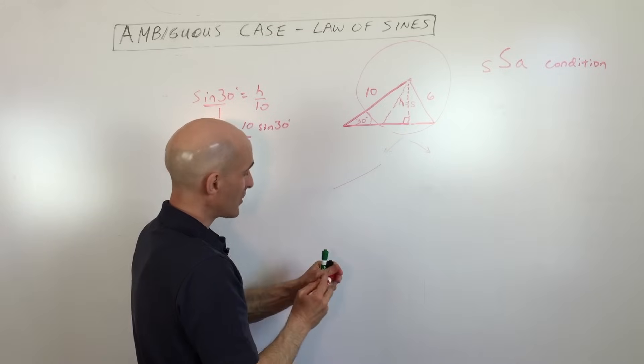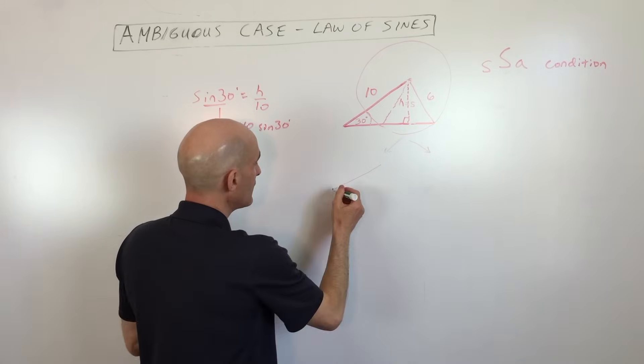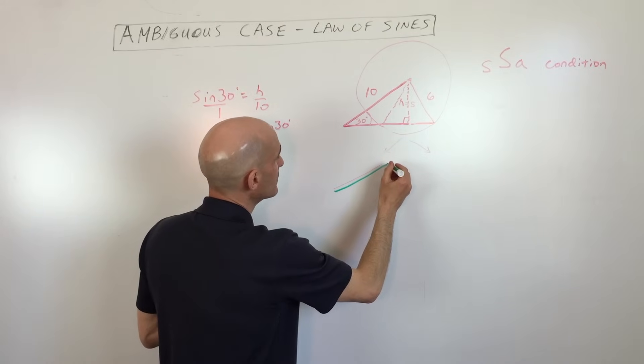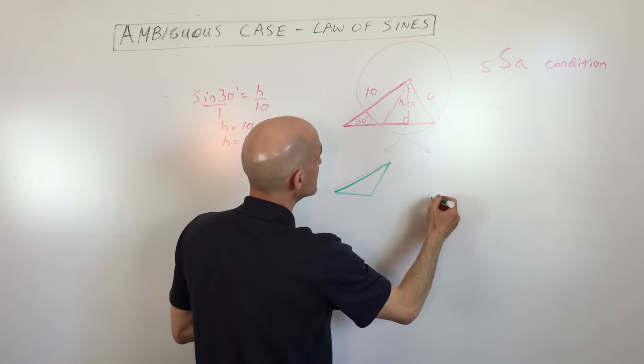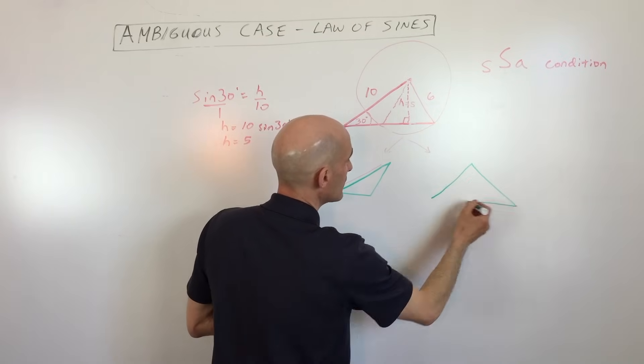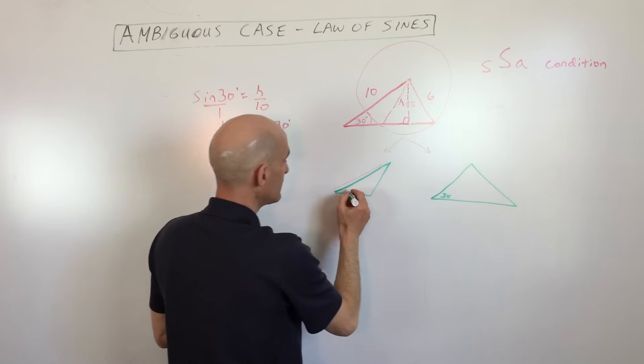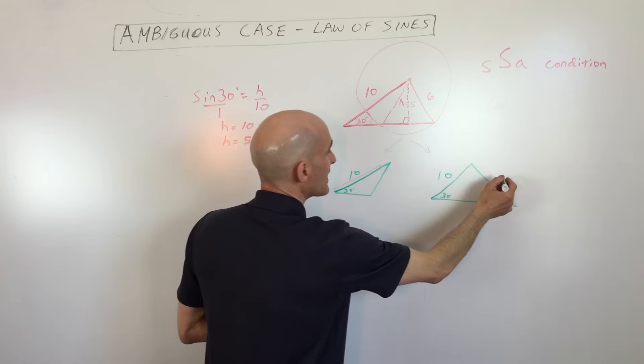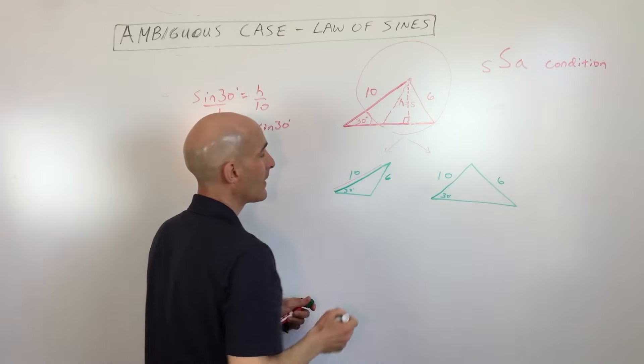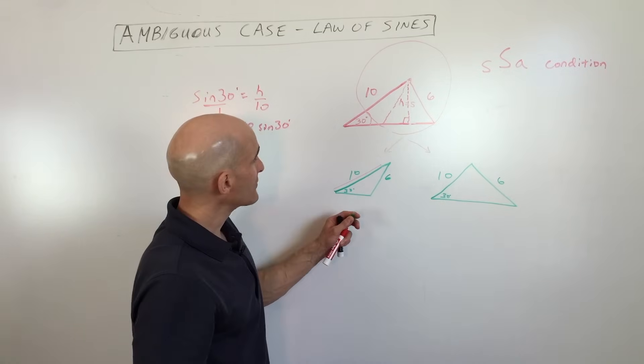let me switch the markers here for us. So we've got this triangle like this, and then we've got this triangle like this. This angle is still thirty, this side's still ten, this side's still six. But what we're going to do now is we're going to do the law of sines.